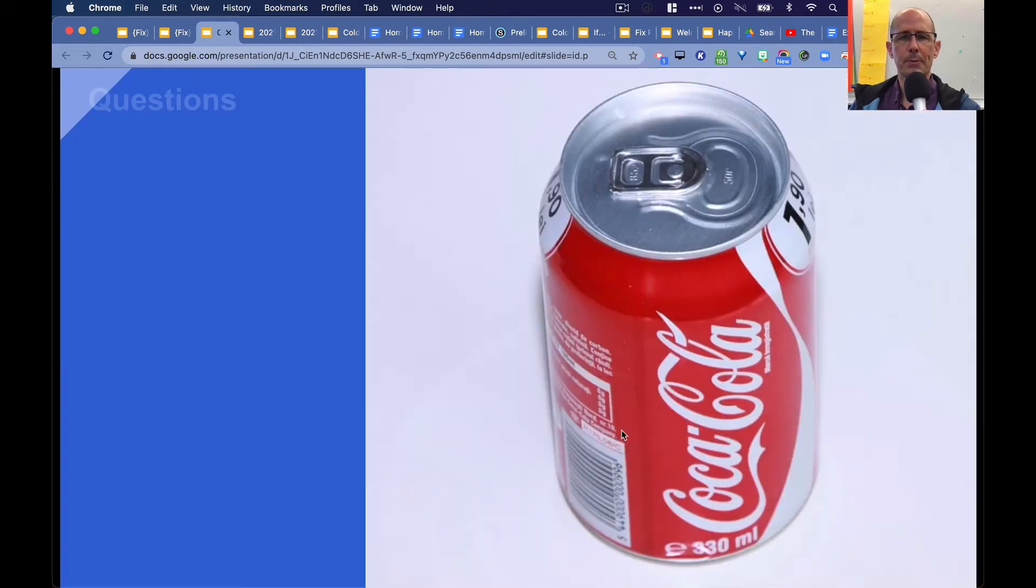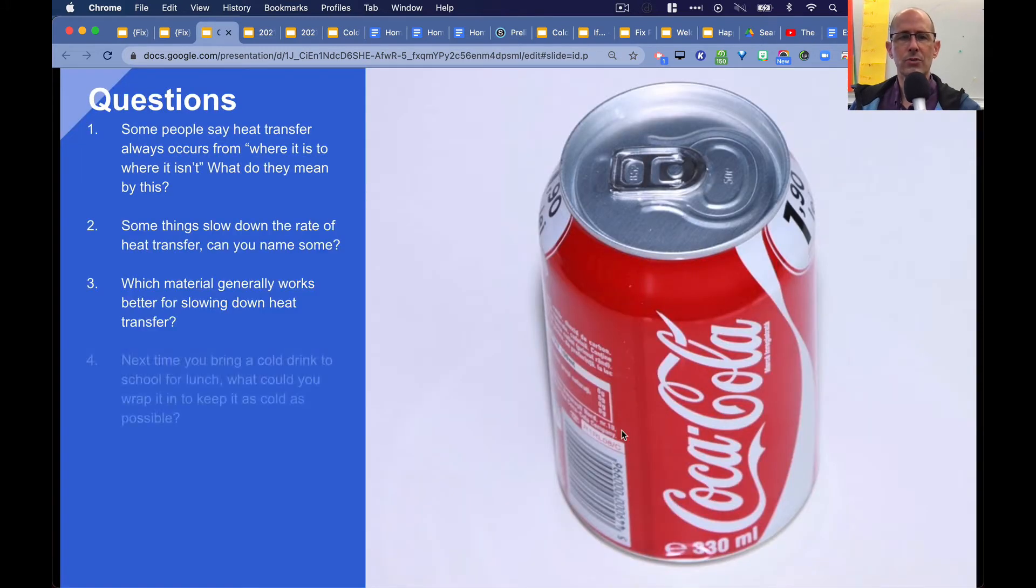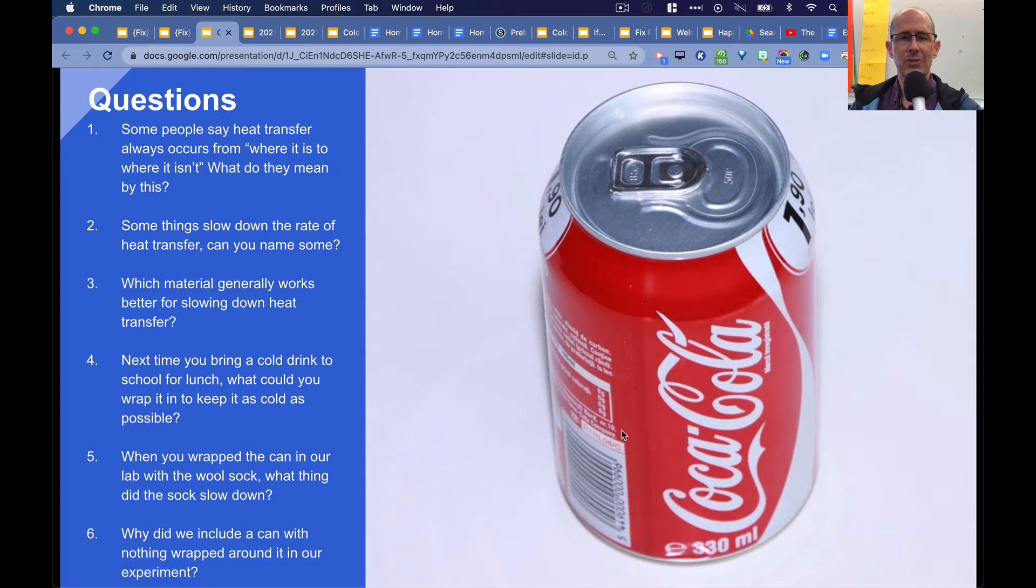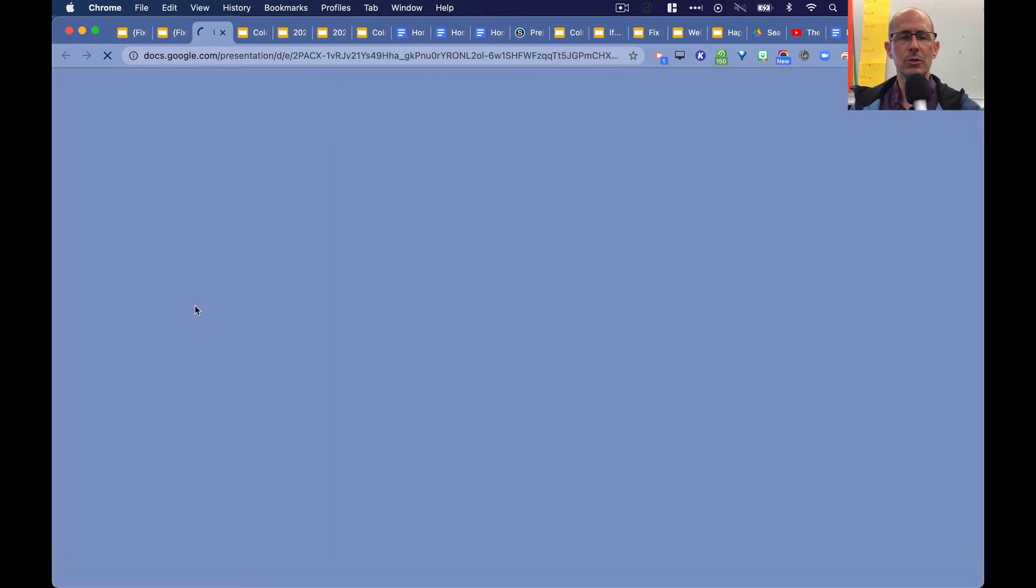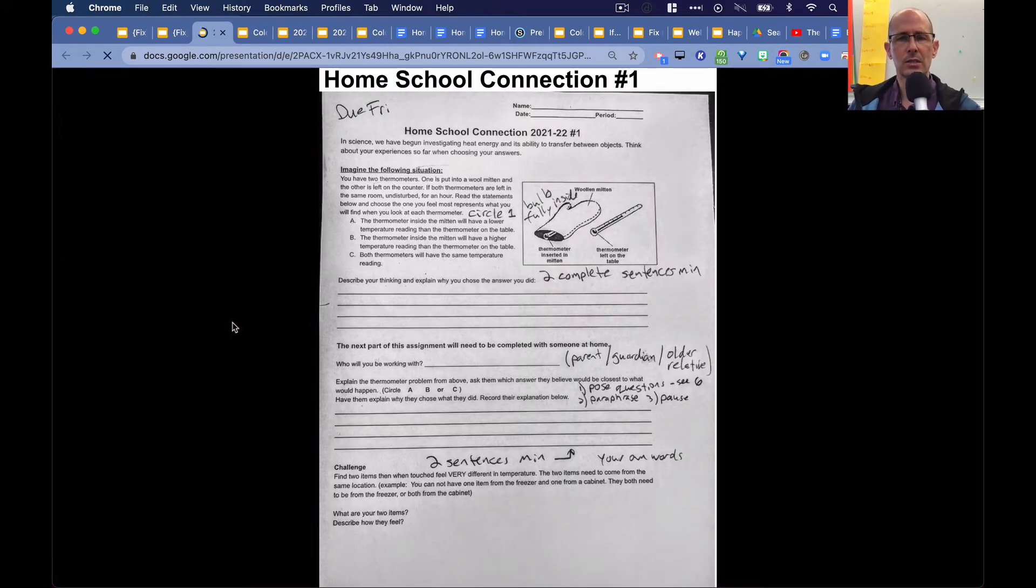Okay, so we then answered the questions based on that data, based on that data table, based on the graph. Okay, I then passed back and went over homeschool connection number one, which I kind of went over in that video last week. And then we added to page eight, the reference notebook. So the reference notebook page eight looks something like this.